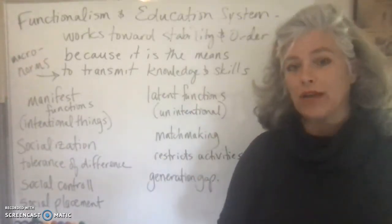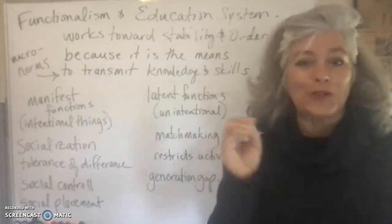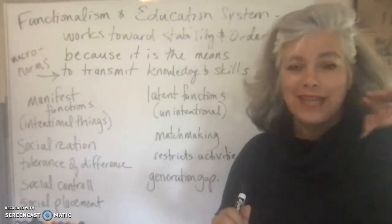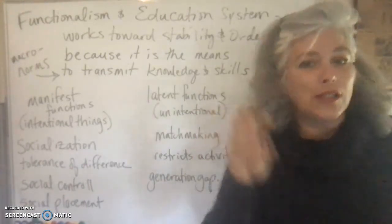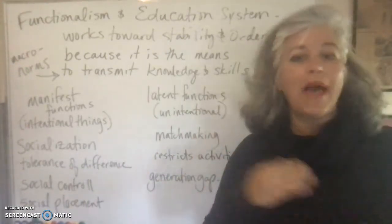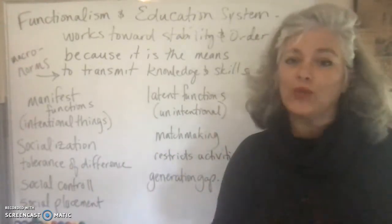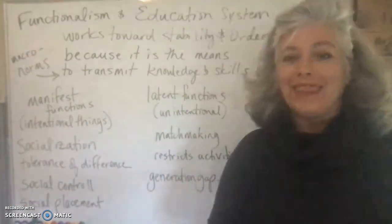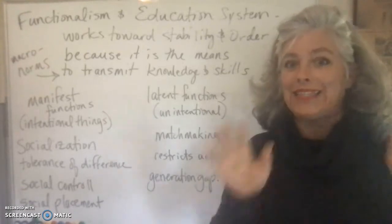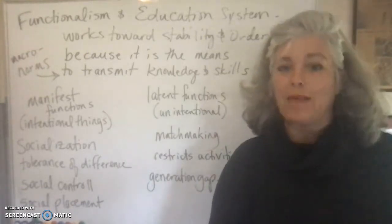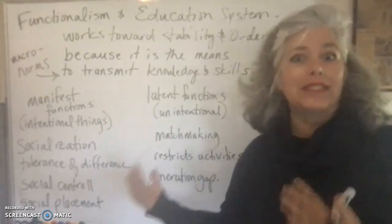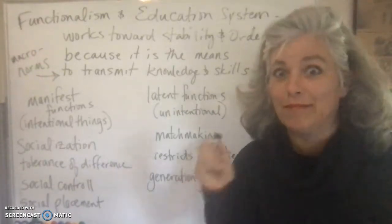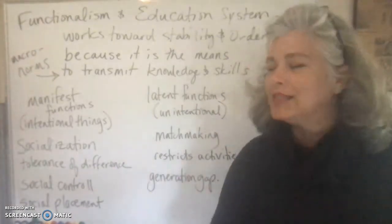The education system fulfills the need for a certain level of knowledge that citizens and residents in the United States are expected to have by the time they hit 18. Your school district, your string of daycares, your homeschool association — whichever micro scale method you use to fulfill that macro scale norm — that's not what we're talking about today. Today we're talking about macro scale stuff with the education system.